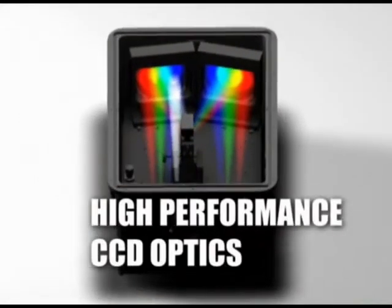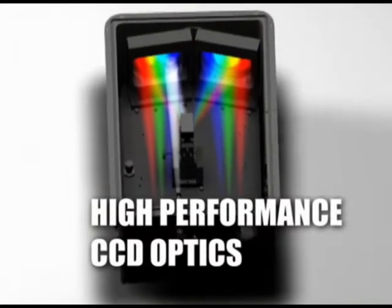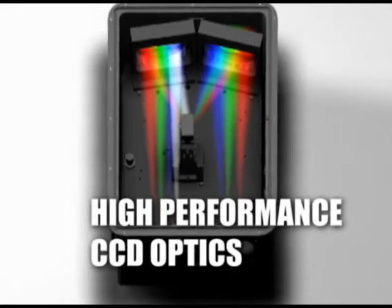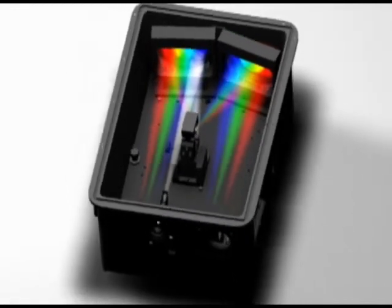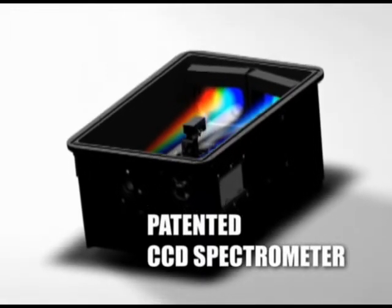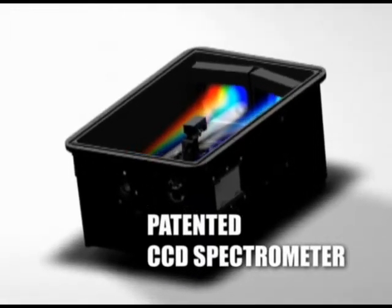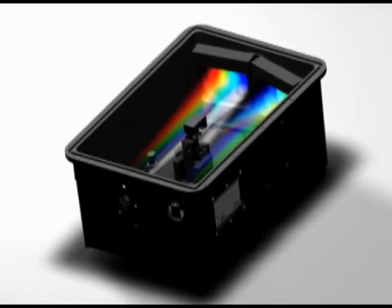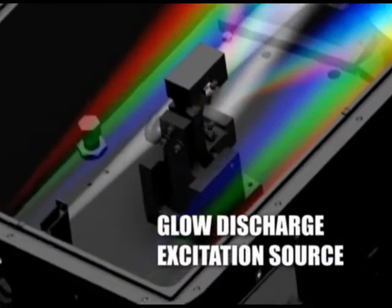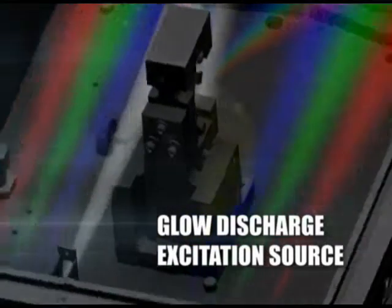Advancements in glow discharge technology and a new CCD spectrometer design have led the way in the development of the GDS500 glow discharge spectrometer. The GDS500 is designed for routine analysis and uses a patented CCD spectrometer coupled to a glow discharge source. The Leco GDS500 brings to the laboratory the controlled, uniform excitation needed for the analysis of your materials.